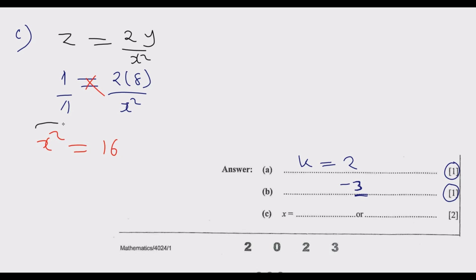We're looking for the value of x, so introduce the square root. The square root of x squared is x. What's the square root of 16? There are two square roots: negative 4 times negative 4 is 16, and 4 times 4 is 16.